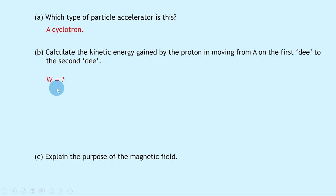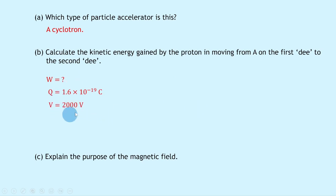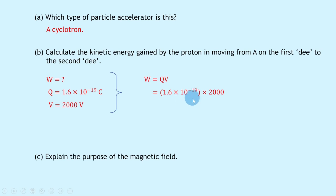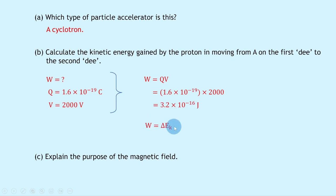Writing down what we know: q = 1.6 × 10⁻¹⁹ coulombs for a proton, and V = 2.00 kilovolts = 2000 volts. Using W = qV and substituting: 1.6 × 10⁻¹⁹ × 2000 = 3.2 × 10⁻¹⁶ joules. Since work done equals the change in kinetic energy, the kinetic energy gained is 3.2 × 10⁻¹⁶ joules.